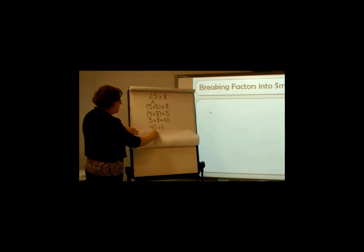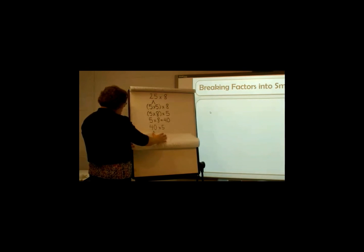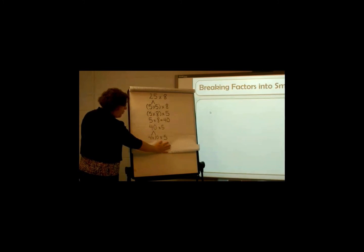That means I'm left with 40 times 5. That 40 is still a two-digit multiplier, so I want to break it down a little bit more. So I'm going to decompose the 40 now into 4 times 10. So then my problem becomes 4 times 10 times 5.